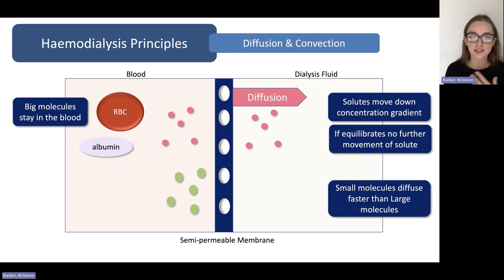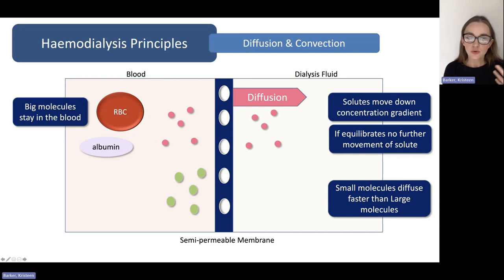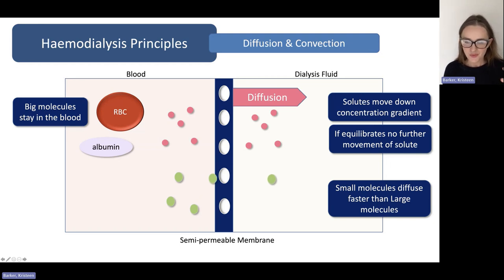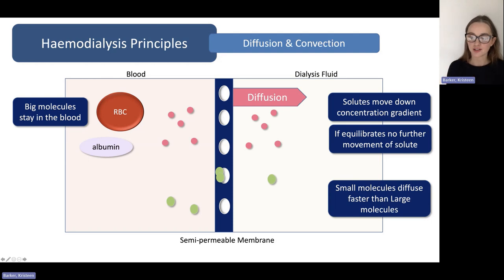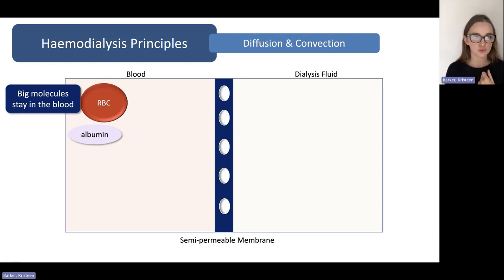Small molecules will just whizz across, whereas larger molecules, even though they can technically fit through the pores, if they're all trying to do it at once they're going to bunch up and get in each other's way — it's just a lot harder. So small molecules diffuse faster than large molecules.